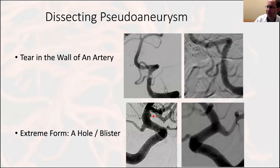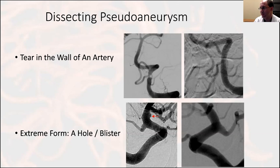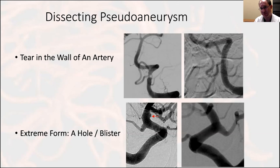In contrast, a dissecting pseudoaneurysm is a tear in the wall of an artery without necessarily an associated branch vessel. The tear can enlarge into a pseudoaneurysm and cause narrowing. Here I've treated a dissecting vertebral artery aneurysm using a flow-diverting stent that remodeled the artery and led to occlusion of the pseudoaneurysm. The extreme form is a frank blister — typically diagnosed in the setting of hemorrhage as a tiny bump on the artery, also treated with flow-diverting stents.